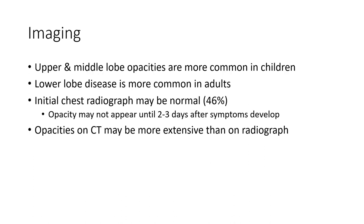Imaging: upper and middle lobe opacities are more common in children. Lower lobe disease is more common in adults. Initial chest radiograph may be normal in 4 to 6 percent of cases. Opacity on CT imaging may be more extensive than on plain radiograph.